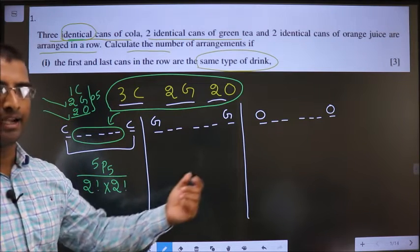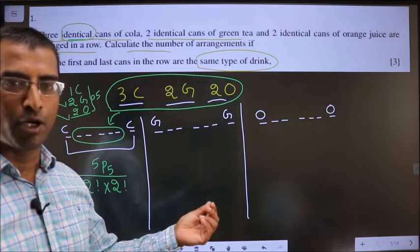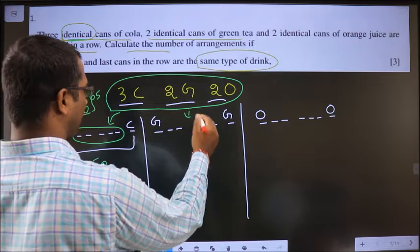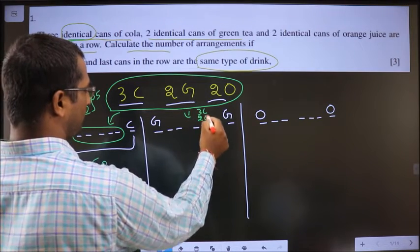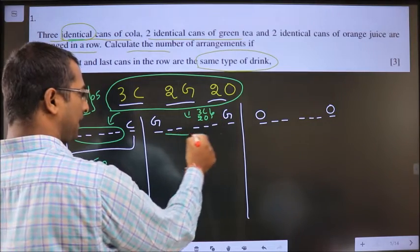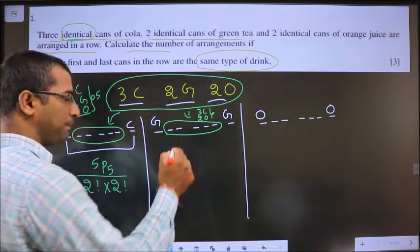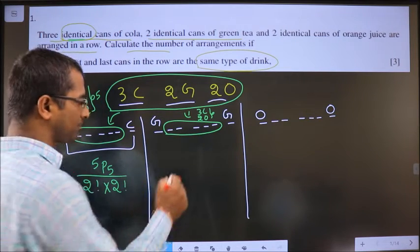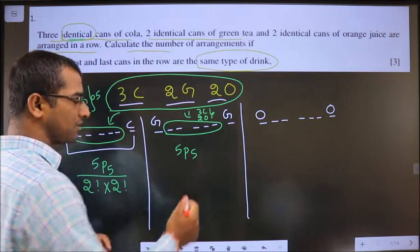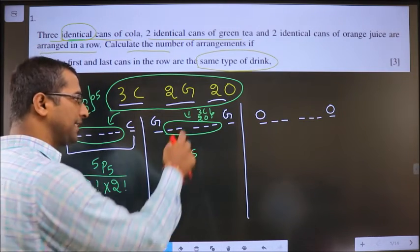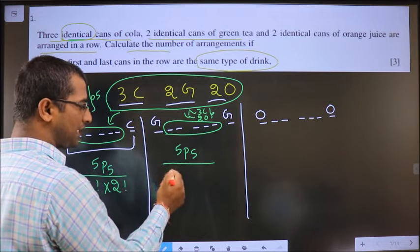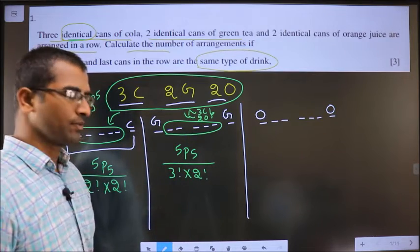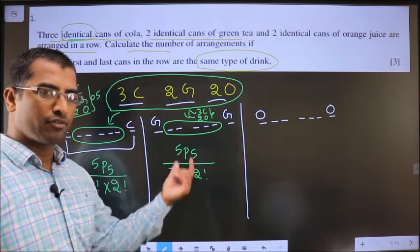Case 2 — Green at ends: from the total, 2G are gone. Left out are 3C and 2O — 5 objects in 5 places, arranged in 5P5 ways. These 3 cola are identical and these 2 orange are identical, so divide by 3! for cola and 2! for orange. This is the answer for this option.